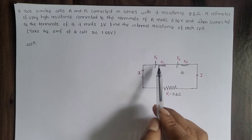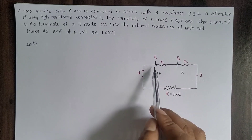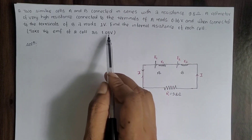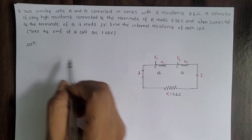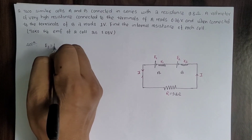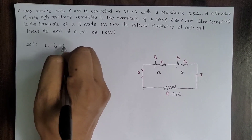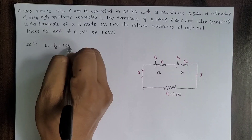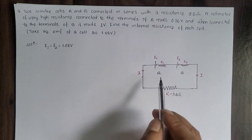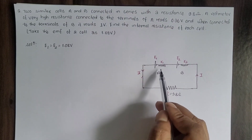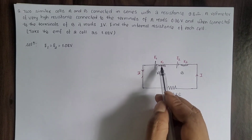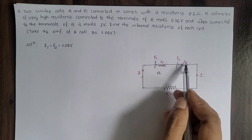From the question, two cells have equal EMF — E1 and E2 both equal to 1.08 volt. The internal resistances of cell A and cell B are R1 and R2 respectively. This is the value given; let's solve it.